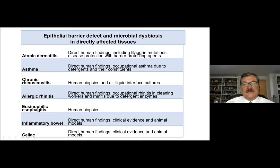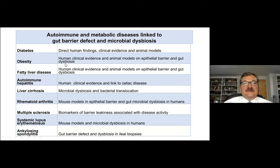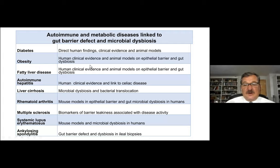The main finding in this first group is barrier damage combined with microbiome dysbiosis. The second group of diseases are autoimmune and metabolic diseases linked to gut barrier defect and sometimes lung barrier defect and microbiome dysbiosis: diabetes, obesity, fatty liver disease, autoimmune hepatitis, liver cirrhosis, rheumatoid arthritis, multiple sclerosis, systemic lupus, and ankylosing spondylitis. All these diseases show epithelial barrier defect in the gut and bacterial and microbial dysbiosis. Many are significantly increasing during the last decades.